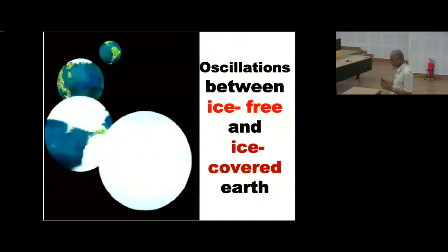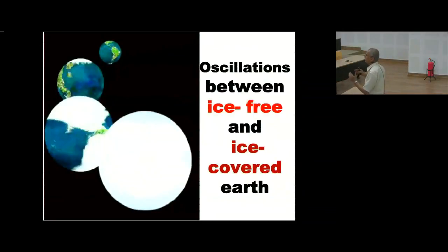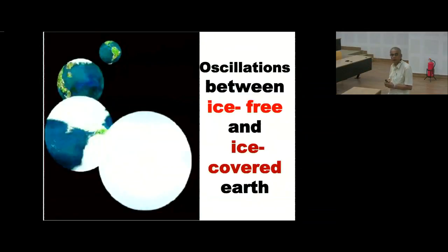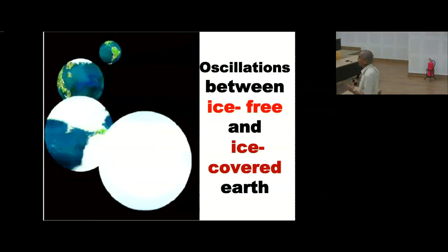The Earth's climate has oscillated between ice ages and periods with very little ice. There is always a debate about how the Earth managed to switch between such extreme conditions, and what are the mechanisms which control that change.